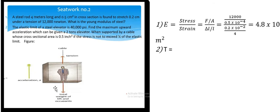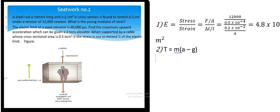The tension involves the gravitational force and the acceleration. We know that m is the weight of the elevator and we have acceleration a. We have minus g because g is going downward and a is going upward. That's why we have a minus g.